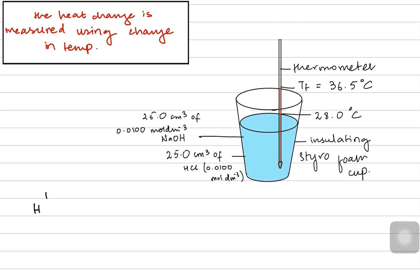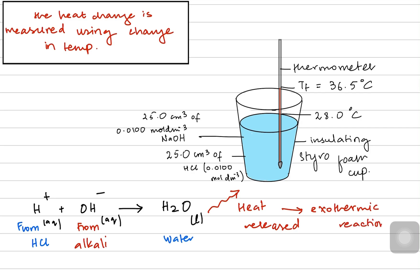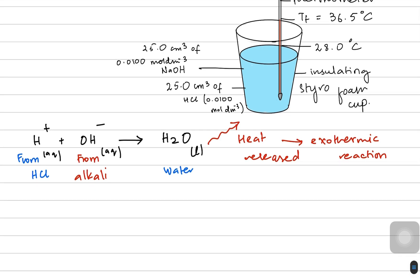Using this data, we know that the reaction was going on between the H⁺ ions from HCl and OH⁻ ions from the alkali. As the reaction proceeded, water was formed — it was a neutralization reaction. The aqueous protons reacted with the aqueous hydroxide to make liquid water. The reaction was exothermic, which is why heat was released and the temperature increased, as the water started warming up. It is the water we are concerned with when we talk about enthalpy.